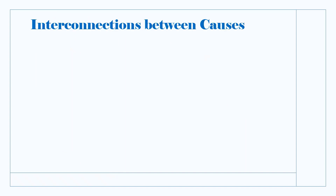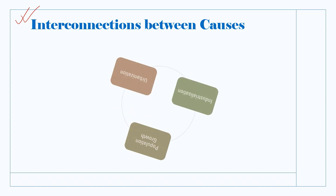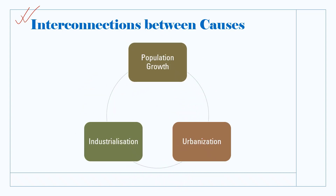The interconnection between population growth, urbanization, and industrialization are mutually reinforcing. Each factor impacts the others, creating a cycle of interdependence that significantly shapes the trajectory of human development and its effects on the environment.